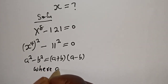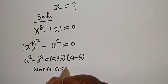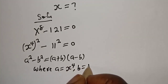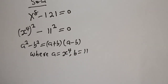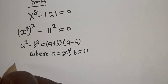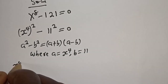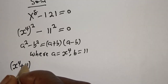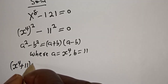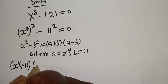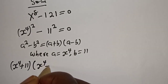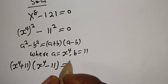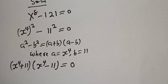Where a is equal to s raised to power 4 and b is equal to 11. So, s raised to power 4 plus 11, multiplied by s raised to power 4 minus 11, is equal to 0.